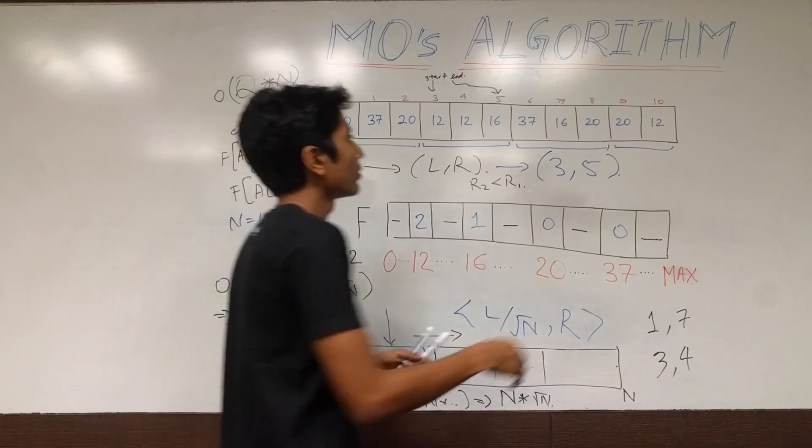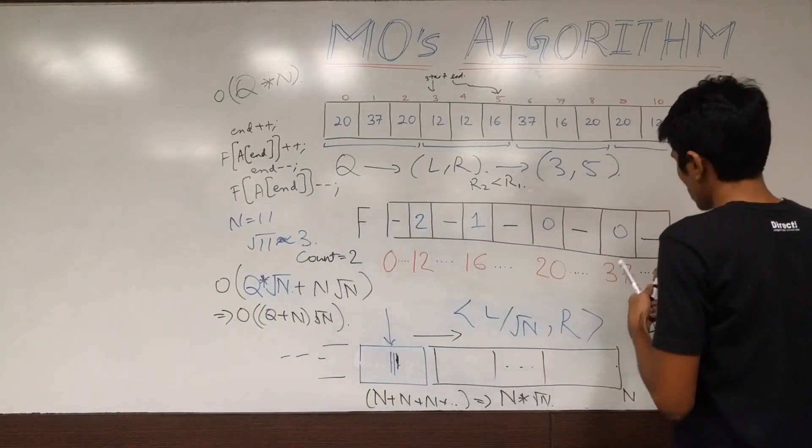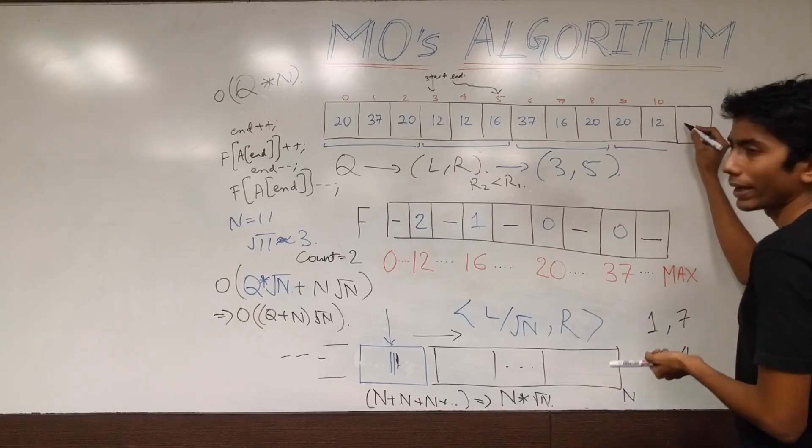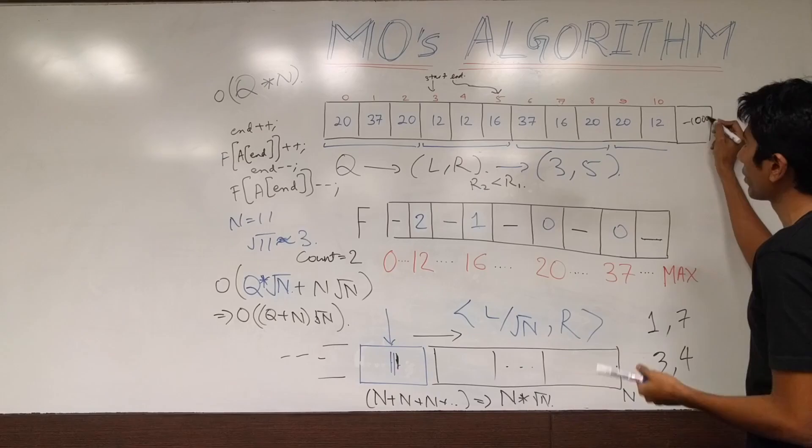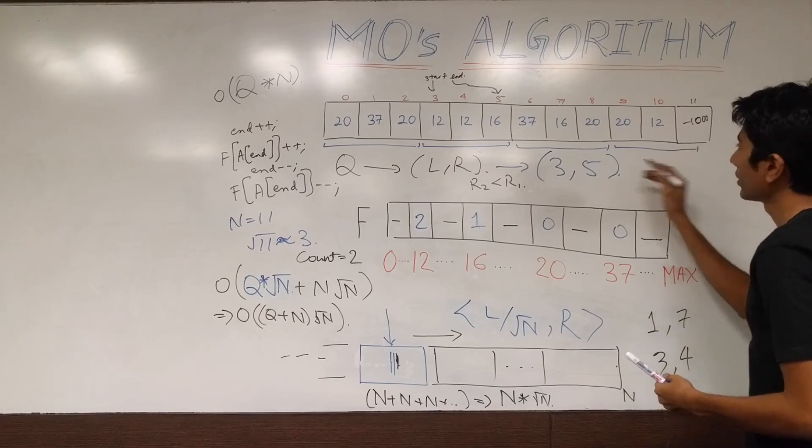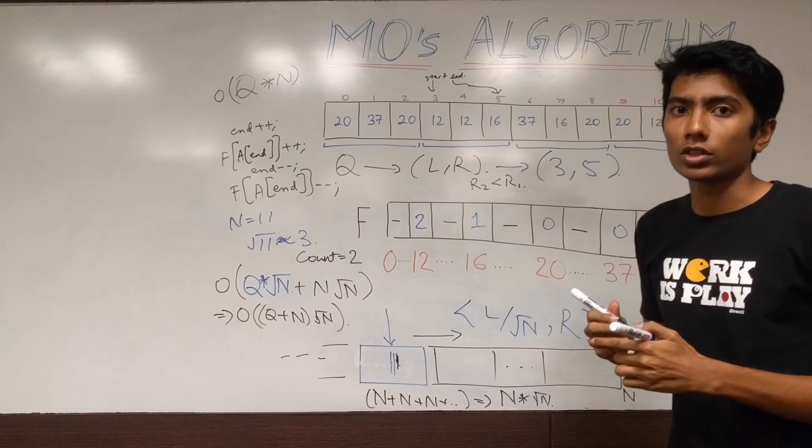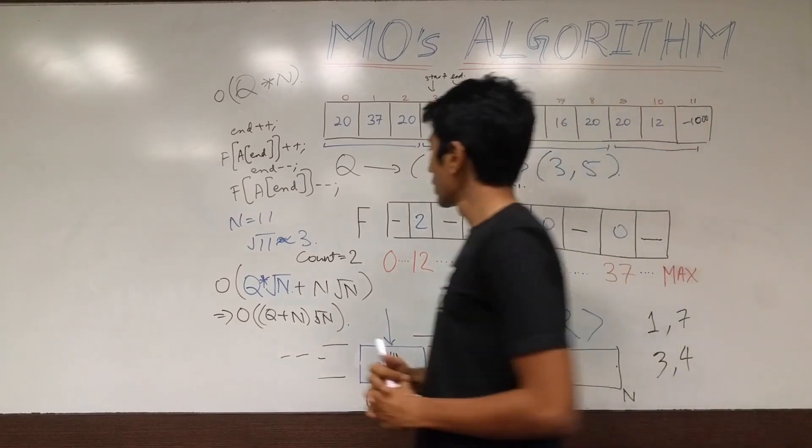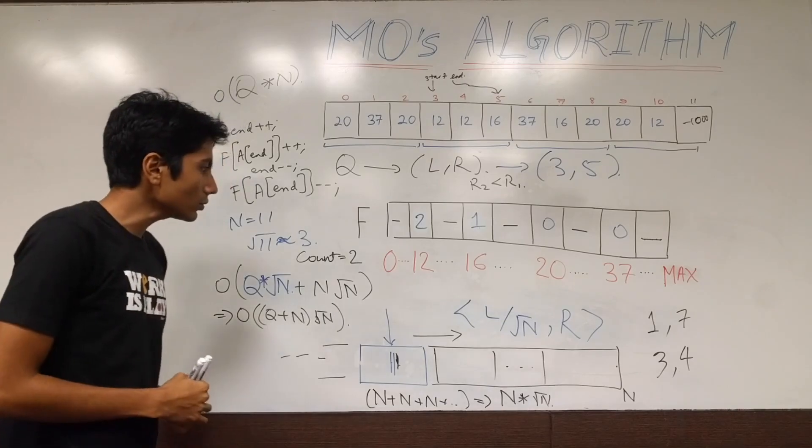You could technically also have appended a 0 here or minus 1, minus 10,000 is also okay. Your queries will never get here. So, you don't need that. And this is going to have an index of 11, so that you get proper block sizes. Right? That's just an implementation detail.